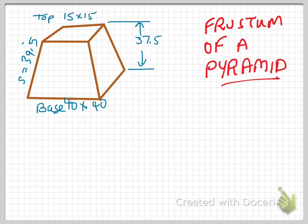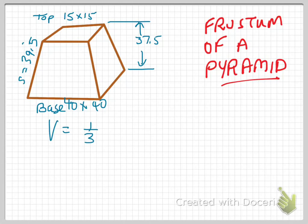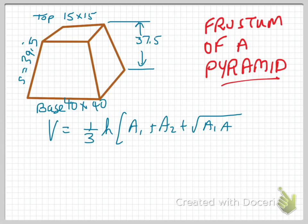One of the questions from your assignments has to do with determining the total surface area and the total volume for the frustum of a pyramid. First of all, let's take a look at the formulas for the surface area and the volume. We'll begin with the volume formula. The volume formula is given by one-third times the vertical height multiplied by A1 plus A2 plus the square root of A1 times A2. That would be the formula for the volume of a frustum of a pyramid — that is, a portion of a pyramid.